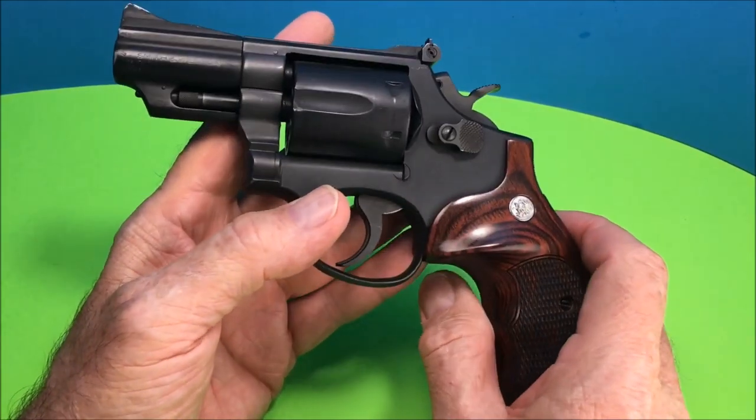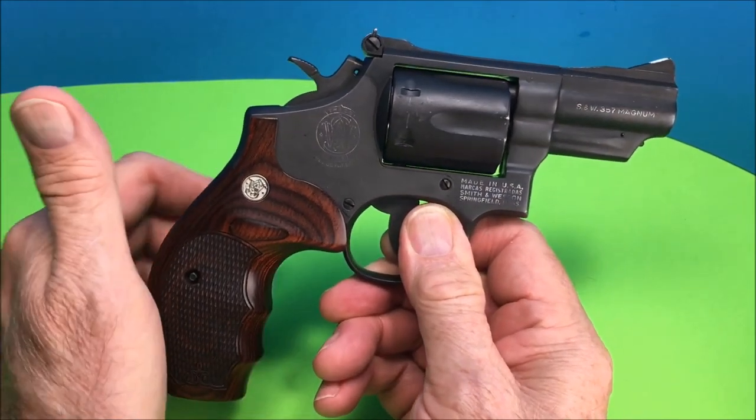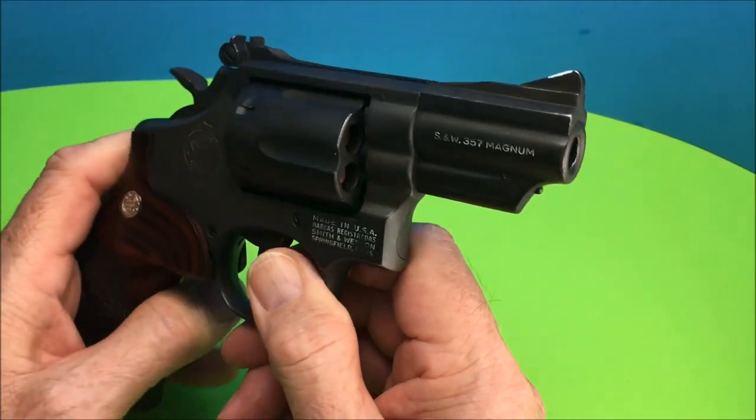This is a Model 19, same as the Model 66, K-frame. The 686 is actually an L-frame. This is a K-frame, the infamous Model 19.